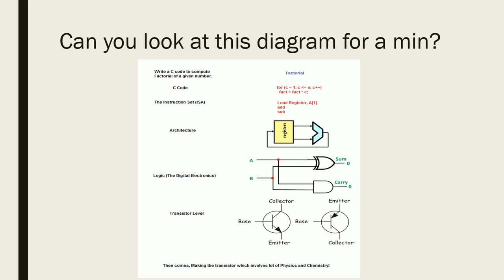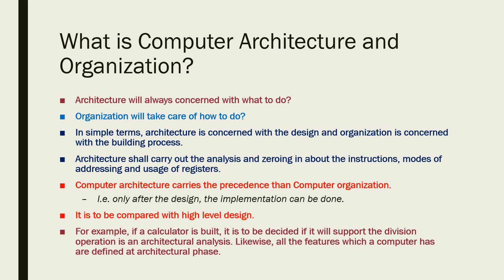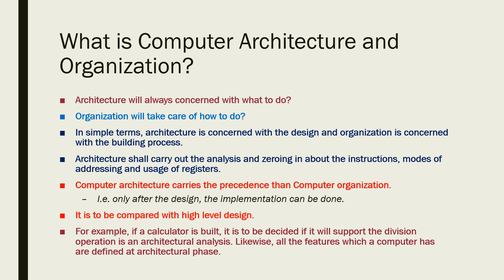We talk about two terms: architecture and organization. Architecture is always concerned with what to do; organization thinks about how to do it. Architecture is connected to the design phase; organization is connected to the building or implementation process. Architecture will design; organization will implement.